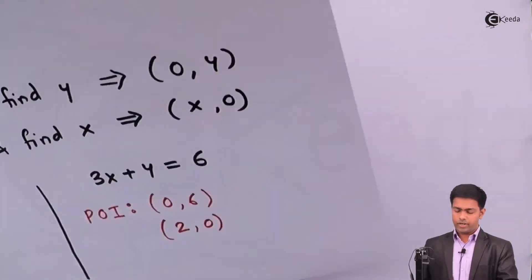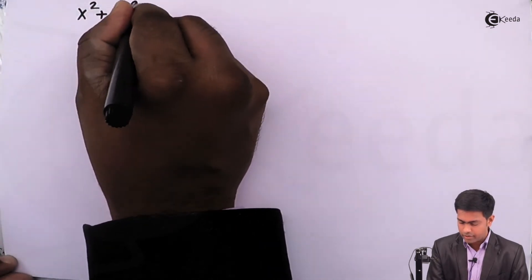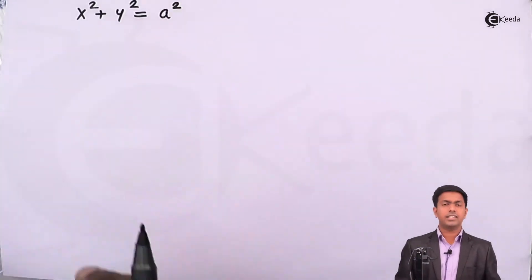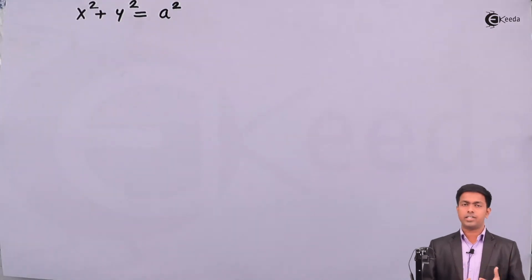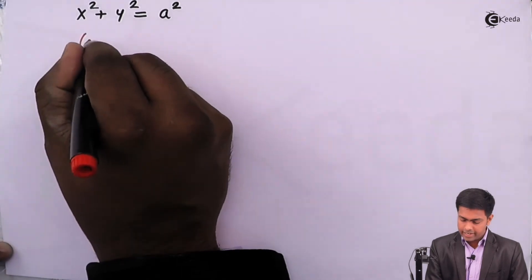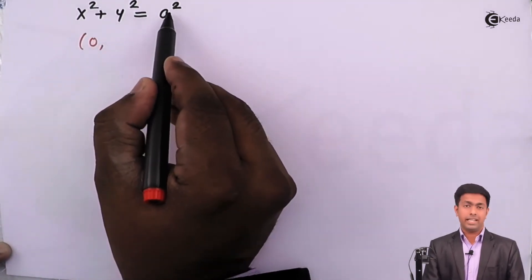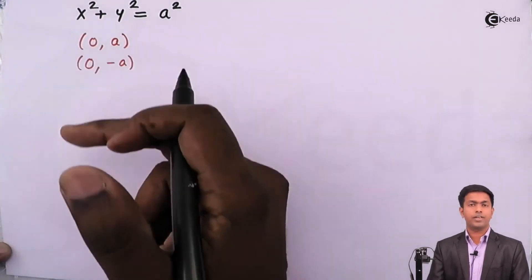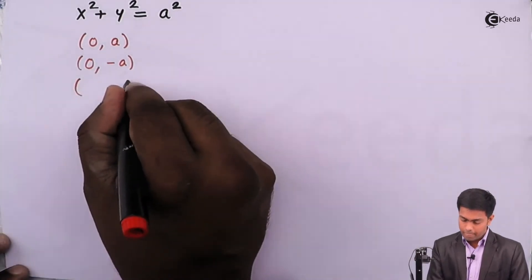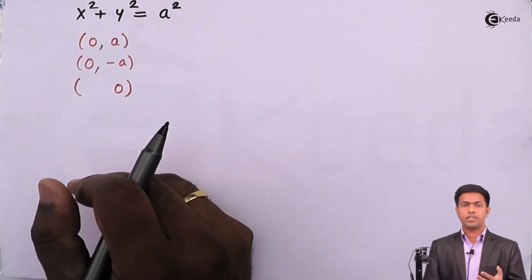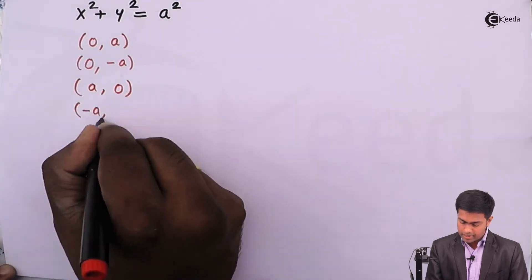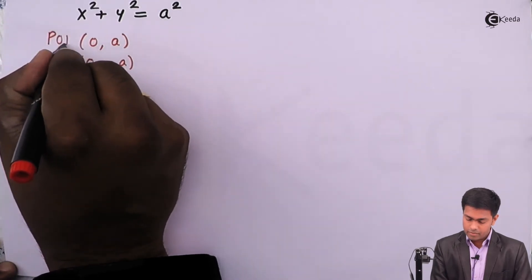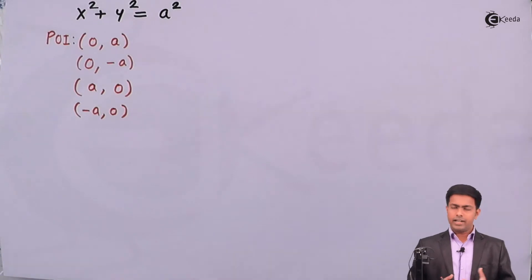Similarly, let's take one more example: a circle with equation x squared plus y squared equal to a squared, where a is the radius. Putting x equal to 0 gives y squared equal to a squared, so y equals plus or minus a — two points of intersection. Putting y equal to 0 gives x squared equal to a squared, so x equals plus or minus a, giving (a, 0) and (−a, 0). So in this case we are getting four points of intersection.